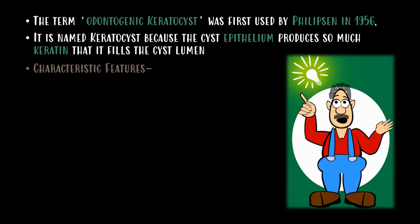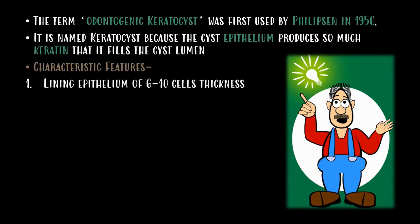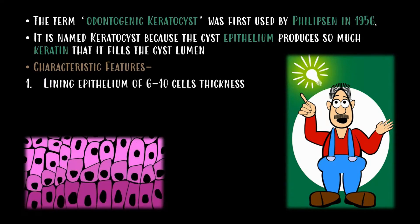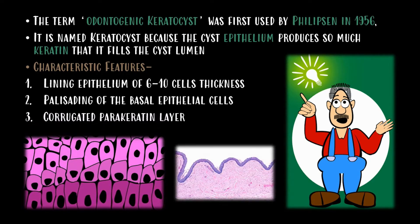The characteristic features include lining epithelium of 6 to 10 cells thickness, palisading of the basal epithelial cells, and a corrugated parakeratotic layer.